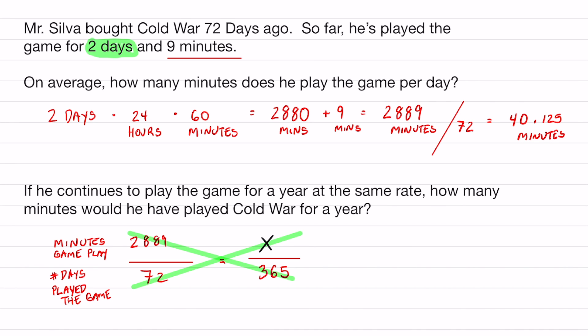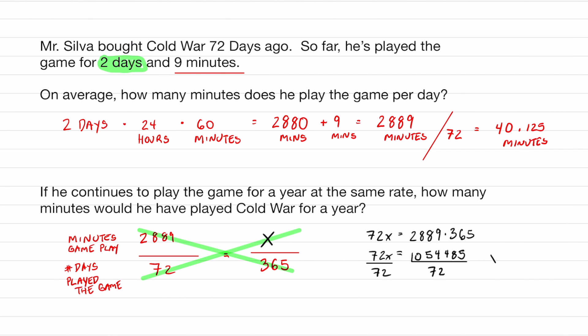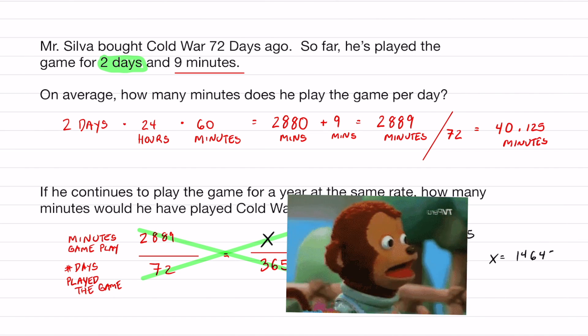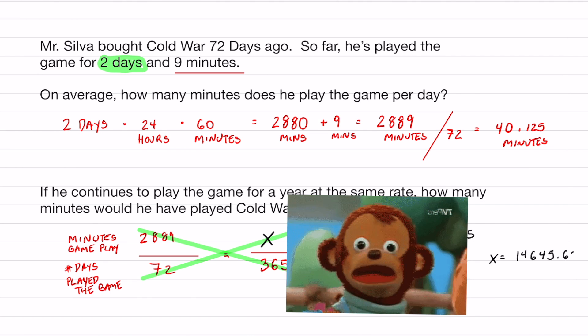Let's do that. 72 times x is 72x. 2,889 times 365. That equals 1,054,485. And then the last step is just to divide both sides by 72 and I will get the total amount of minutes I'm projected to play this game for the entire year if I continue that same pattern. 14,645.625 minutes.